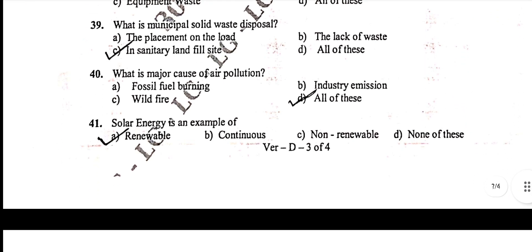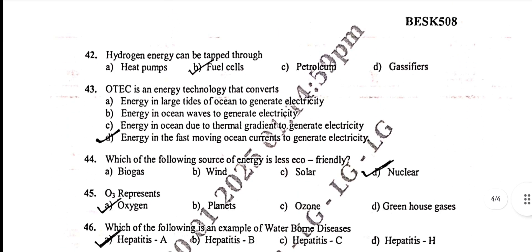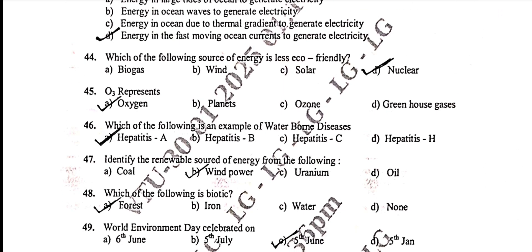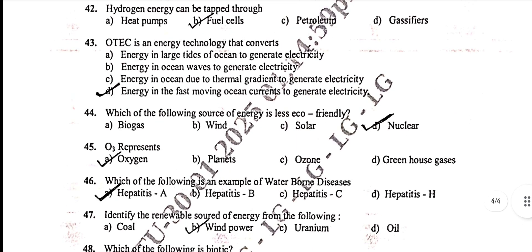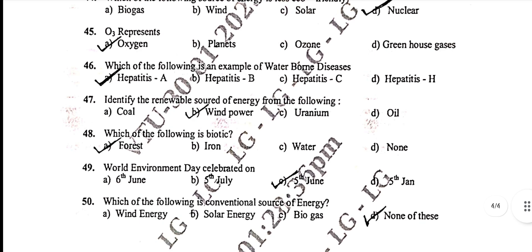Fortieth: all of these. Forty-first: renewable. Forty-second: option B — fuel cells. Forty-third: energy in fast-moving ocean currents to generate electricity. Forty-fourth: nuclear. Forty-fifth: oxygen. Forty-sixth: A — hepatitis A. Forty-seventh: B — wind power. Forty-eighth: A — forest. Forty-ninth: 5th June, option C.